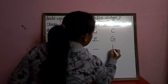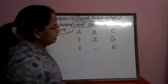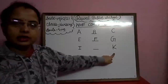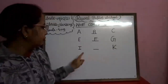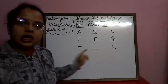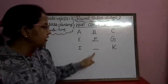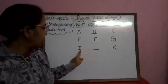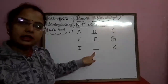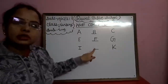I and K. What comes between I and K? I aur K ke beech mein konsa letter aata hai? J. So we will write here J. I, J, K.